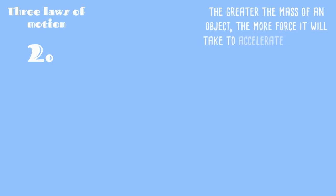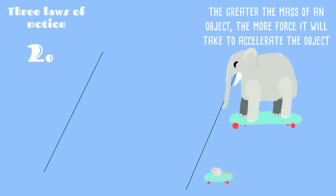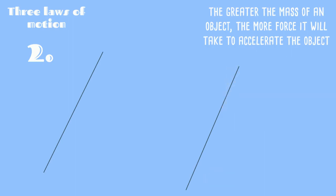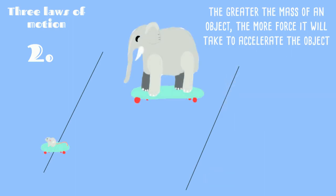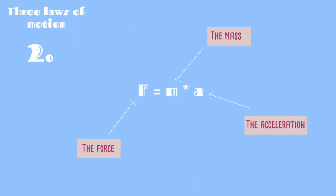Newton's second law of motion: the greater the mass of an object, the more force it will take to accelerate the object. Let us design a thought experiment. Imagine you have an elephant on a skateboard and a mouse on a skateboard. The elephant weighs 1 ton while the mouse weighs 100 grams. If you push the elephant and the mouse at the same time with the same force, the mouse will go much further than the elephant. The equation for this law is F equals mass times acceleration. F is the force, M is the mass, and A is the acceleration. The force for which you push the elephant depends on its mass and how hard you push it.